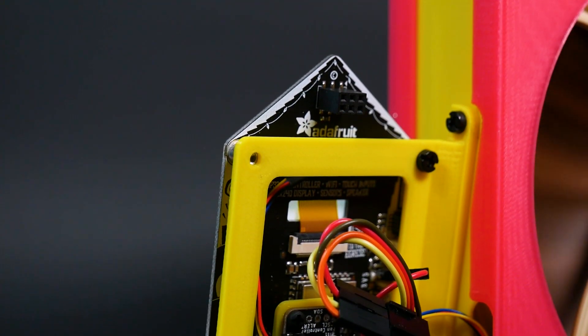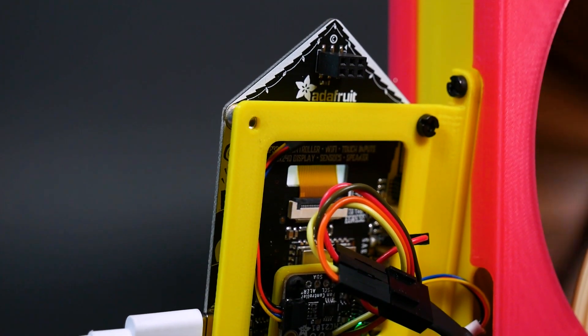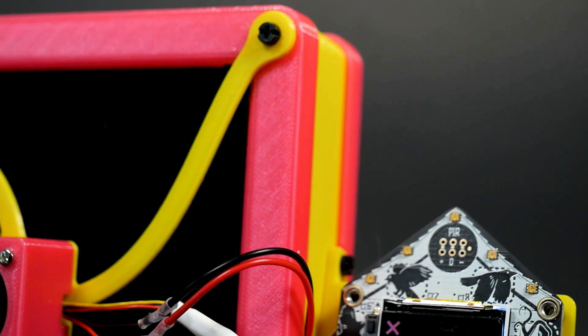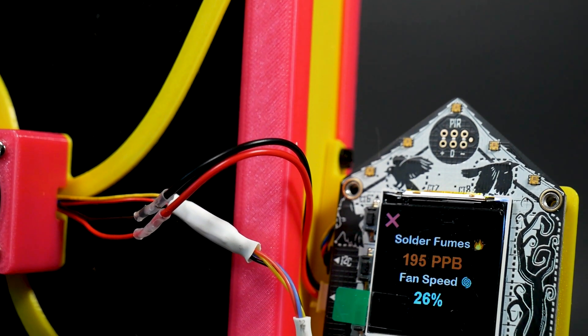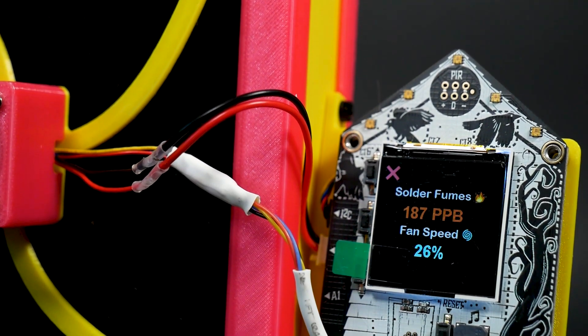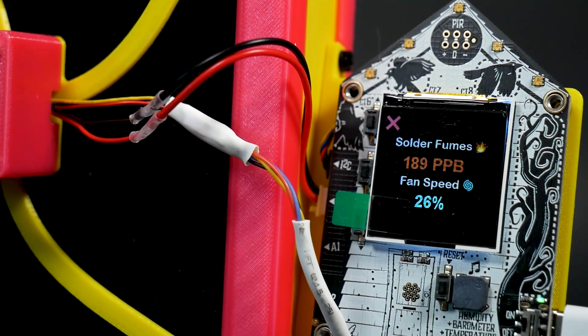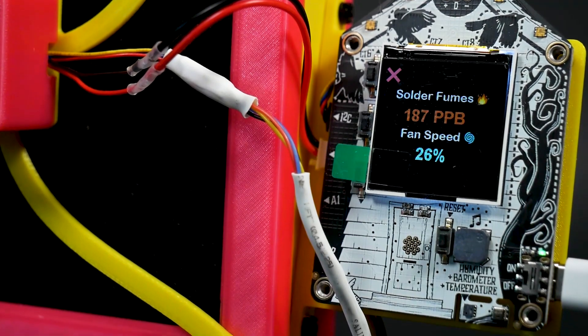The enclosure also has mounts for the sensors and the Funhaus board. I printed mine in pink and yellow, which is one of my favorite color combinations because it's really obnoxious, borderline ugly, but still kind of matches. Like you can just get away with it.